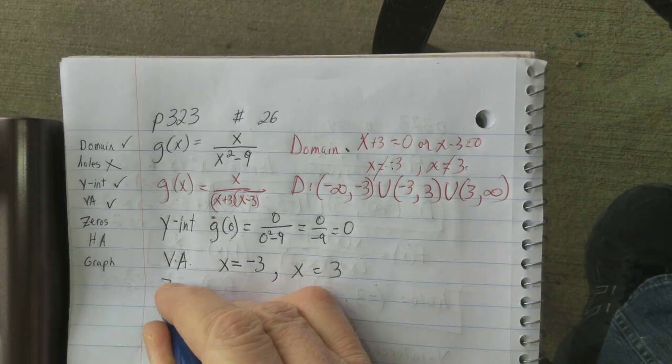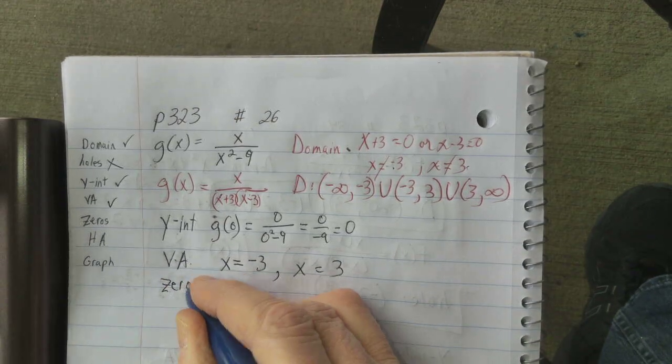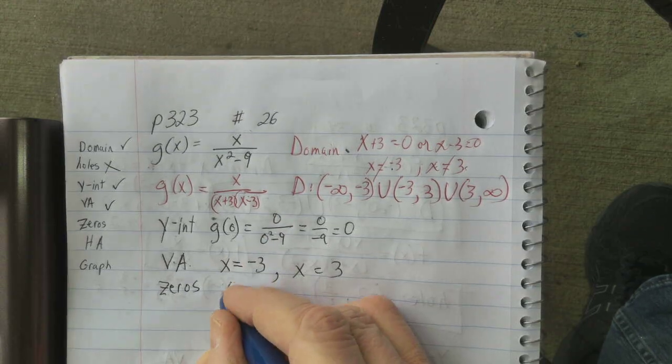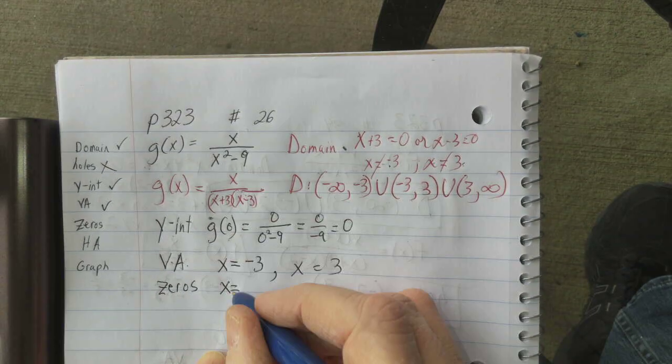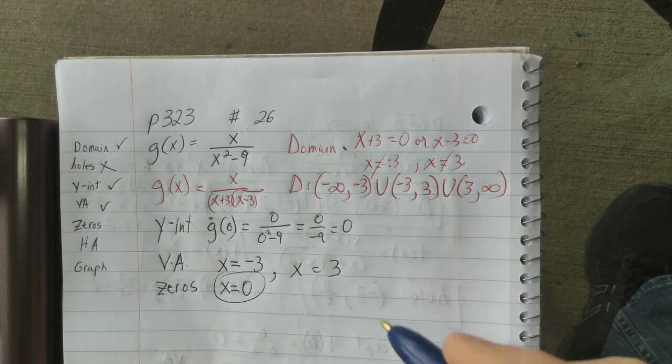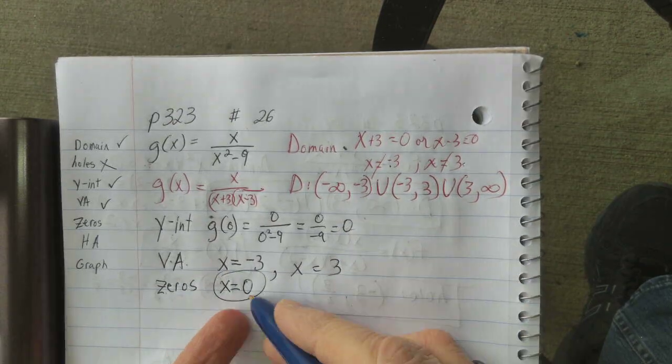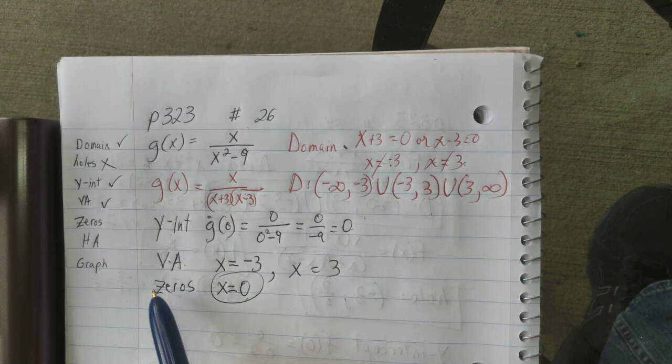The zeros. We get the zeros when we set the numerator equal to 0. That's x is the numerator. Set that equal to 0. You got x equals 0. So it is going through 0, 0. It is a y-intercept. It's also the 0. It's also the x-intercept.